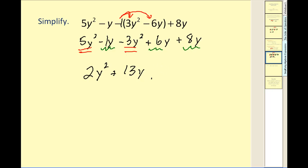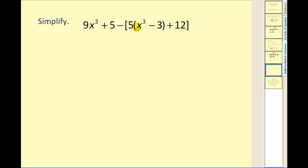There's one last example. Again, we start with the innermost parentheses. We cannot combine x cubed minus 3, but we can distribute the 5. So let's do that first.